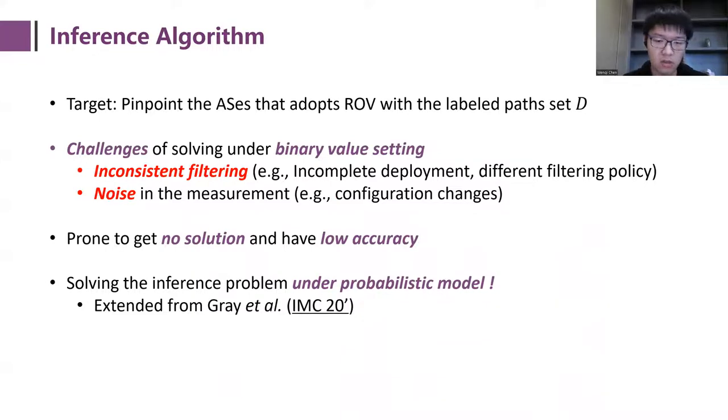Then in the inference algorithm, our target is to find the ASes that adopt ROV with observed data D. If we model the problem under binary settings, the results can be easily influenced by the inconsistent filtering on different paths or the noise in the measurement, which is prone to get no solution and inaccurate results. In light of this problem, we choose to model the problem under probabilistic settings.